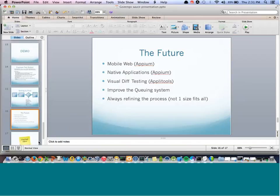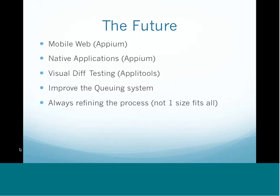Another thing we want to do is improve our queuing system. Right now it's kind of the honor system — hey, I was here first, so I'm going, don't deploy while I'm deploying. We want to get to a point where we can use Hubot to actually enforce the queue: developer X is in the queue, you cannot deploy until developer X is done.